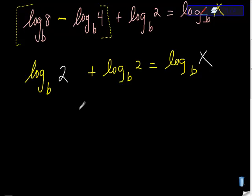Now, using the first property of logarithms, I know that I can condense this. Base b and base b, the bases match, so these argument values can be multiplied, and 2 times 2 is 4. So I get log base b of 4 equals log base b of x.